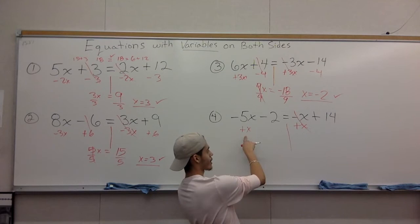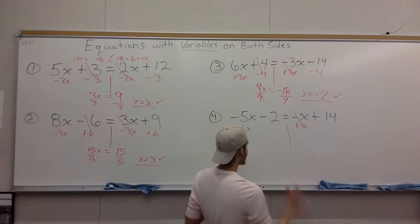We have negative 5x plus 1x. Think of x as just 1x. So if you owe me $5, then I give you $1, you still owe me $4, so you have negative 4x.